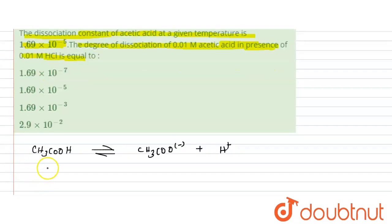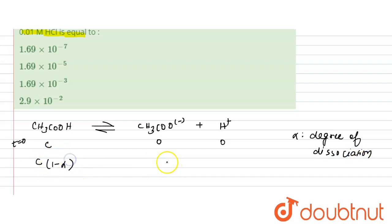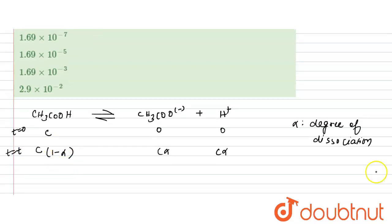Let's say its initial concentration is C at time T = 0. If alpha is the degree of dissociation, then at time T the concentrations will be: CH₃COOH = C(1 − α), CH₃COO⁻ = Cα, and H⁺ = Cα.